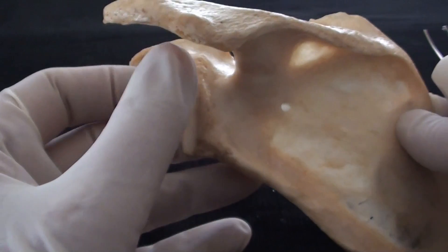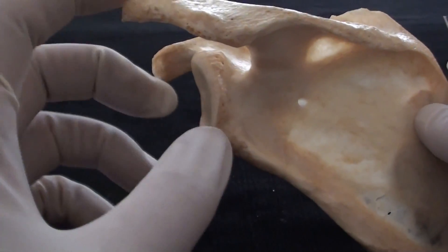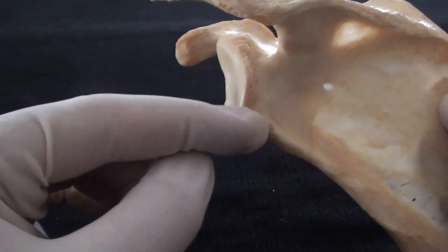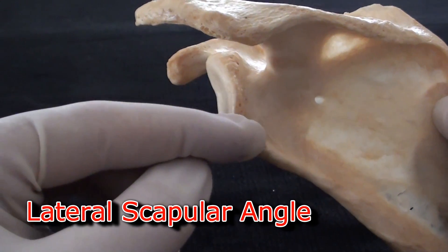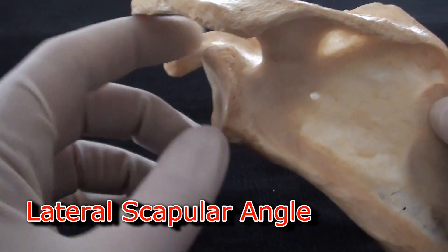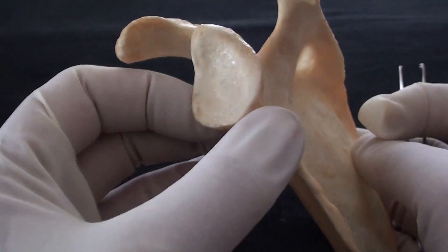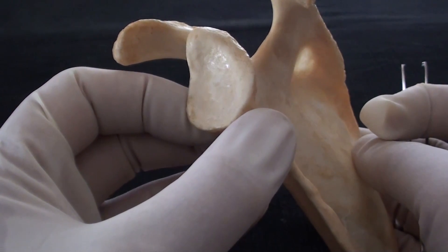Therefore, the entire part of the scapula that I'm currently pointing to is what should be referred as the lateral scapular angle forming the glenoid cavity or the glenoid fossa.